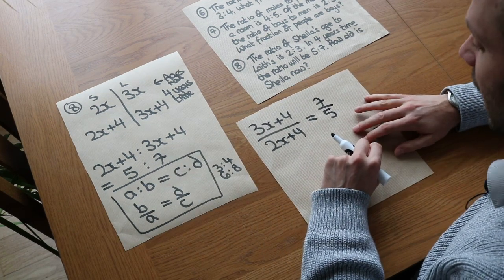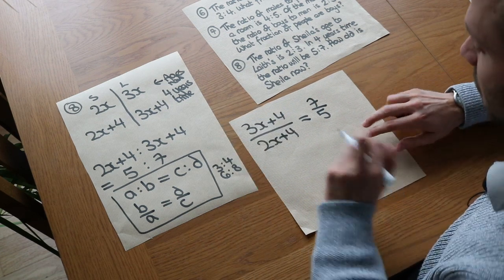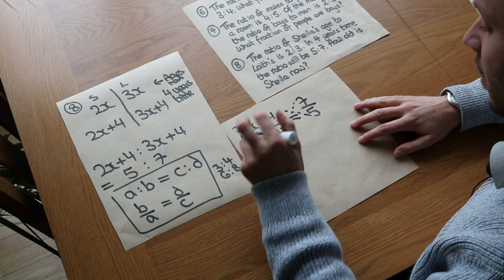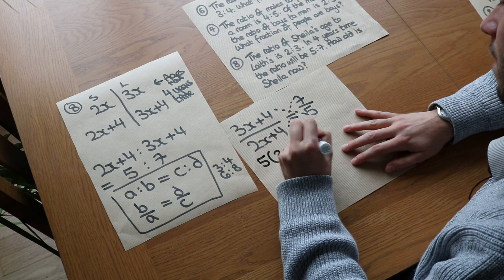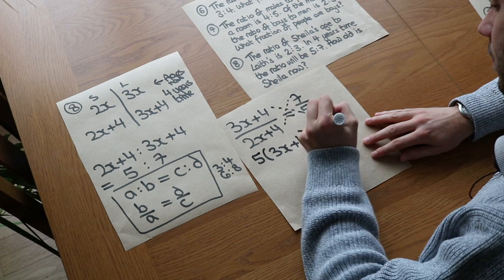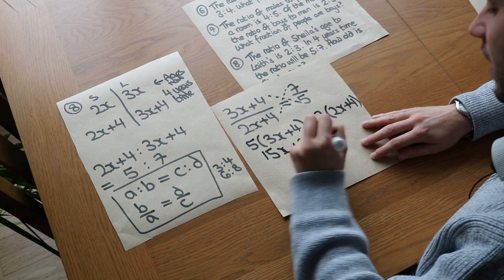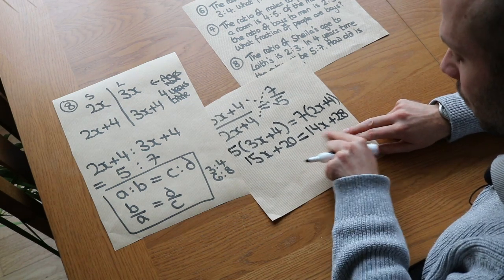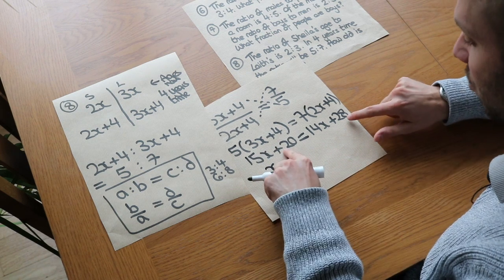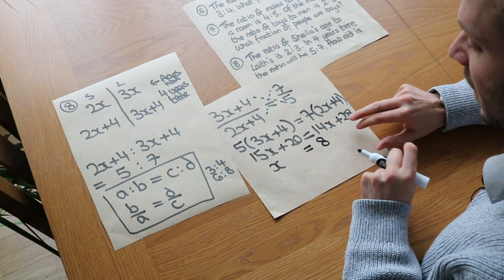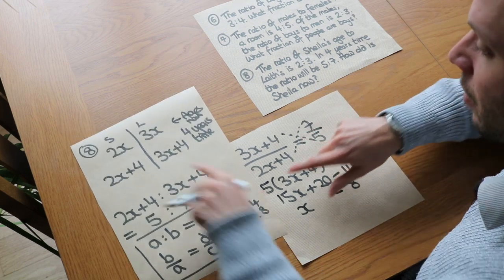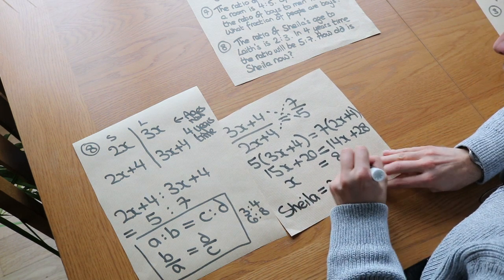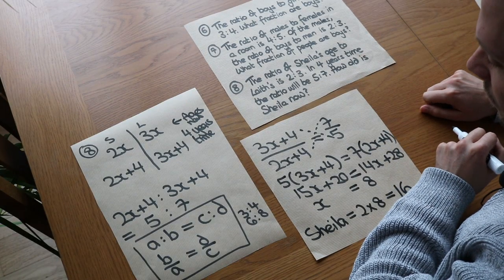We've now got an equation we can solve. Cross-multiplying gives 5 times (3x + 4) equals 7 times (2x + 4). Expanding: 15x + 20 equals 14x + 28. Collecting x's on one side — subtract 14x and subtract 20 — gives x equals 8. We want to know how old Sheila is now: Sheila's age is 2x, so 2 times 8 equals 16 years old. And I know that was a very difficult question — thanks for listening.